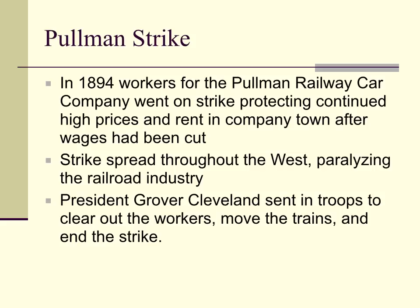Another major strike was the Pullman Strike. In 1894, workers for the Pullman Railway Car Company went on strike, protesting continued high prices and rent in the company town after wages had been cut. Their wages were cut, but they still had to pay high prices and rent — a prime example of how the company town basically owned you. The strike spread throughout the West, paralyzing the railroad industry, and President Grover Cleveland had to send in troops to move the trains and end the strike.